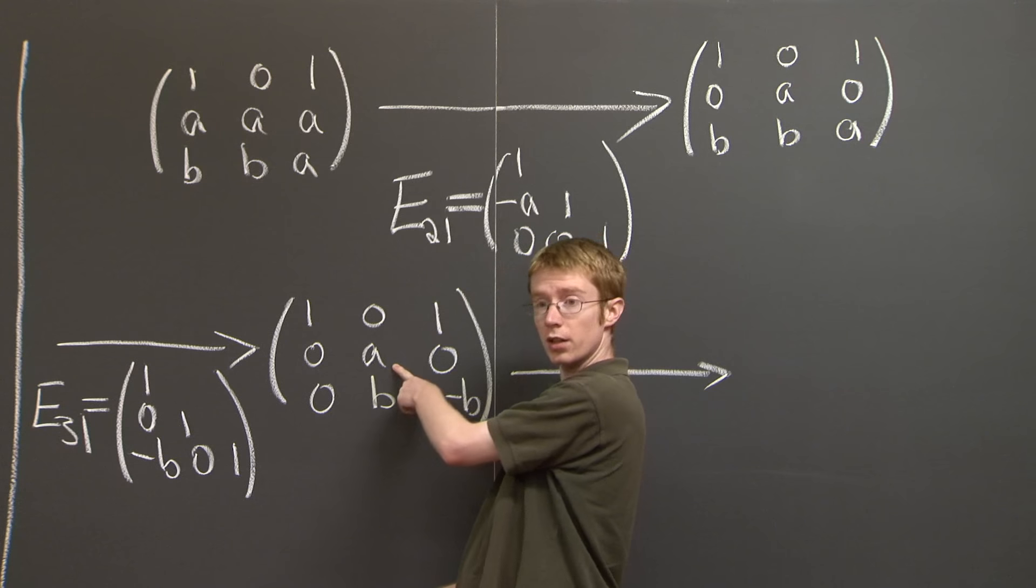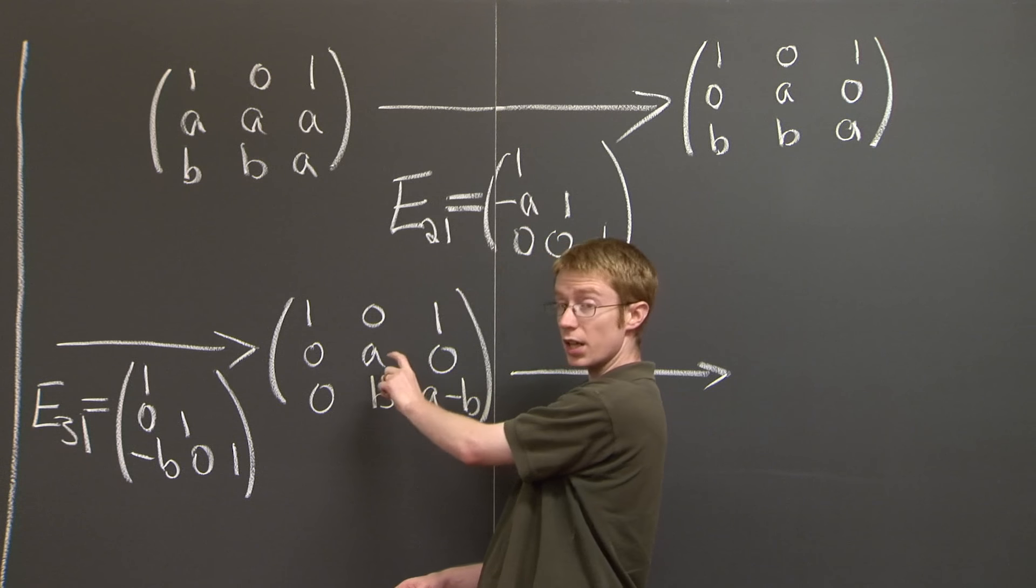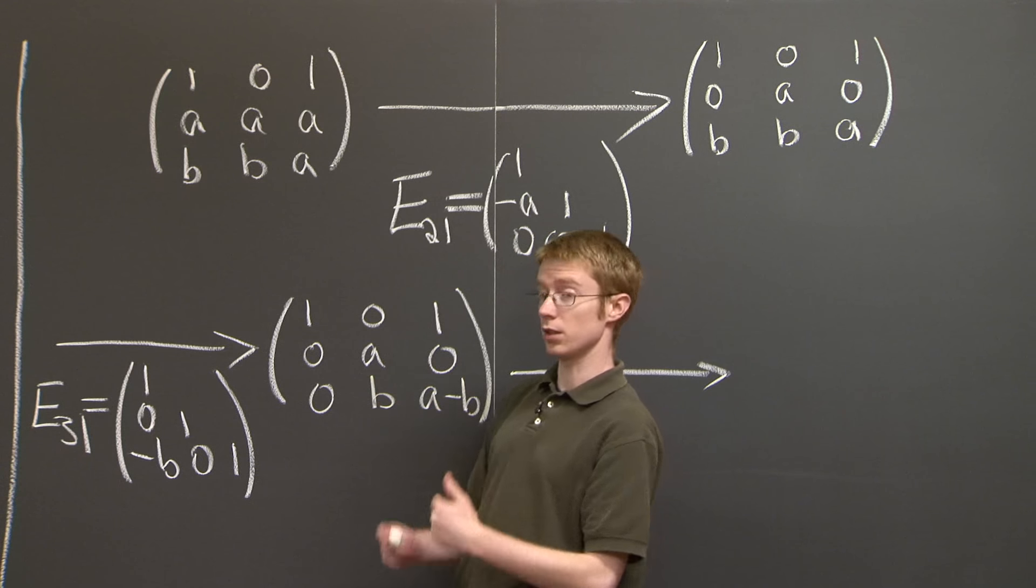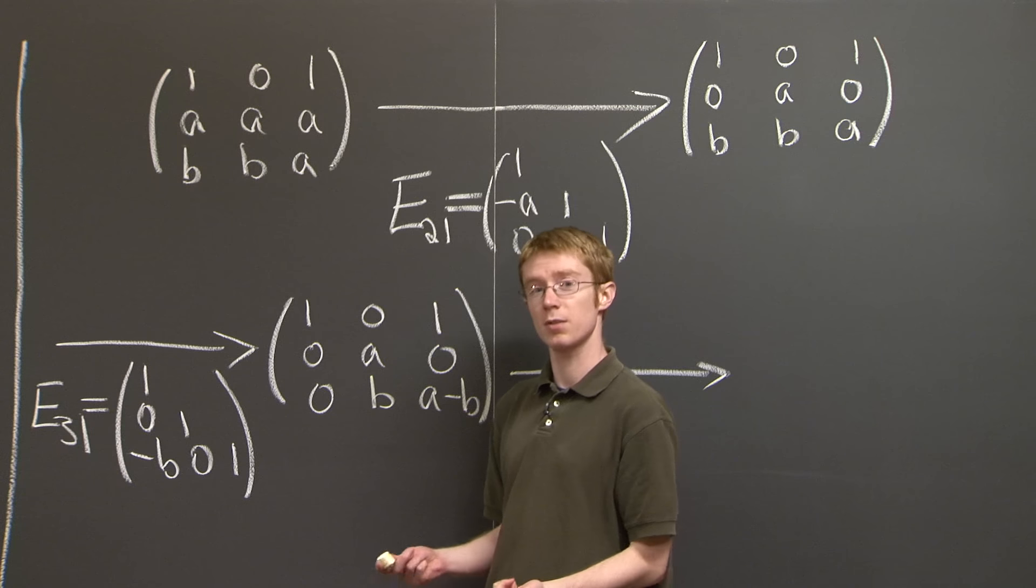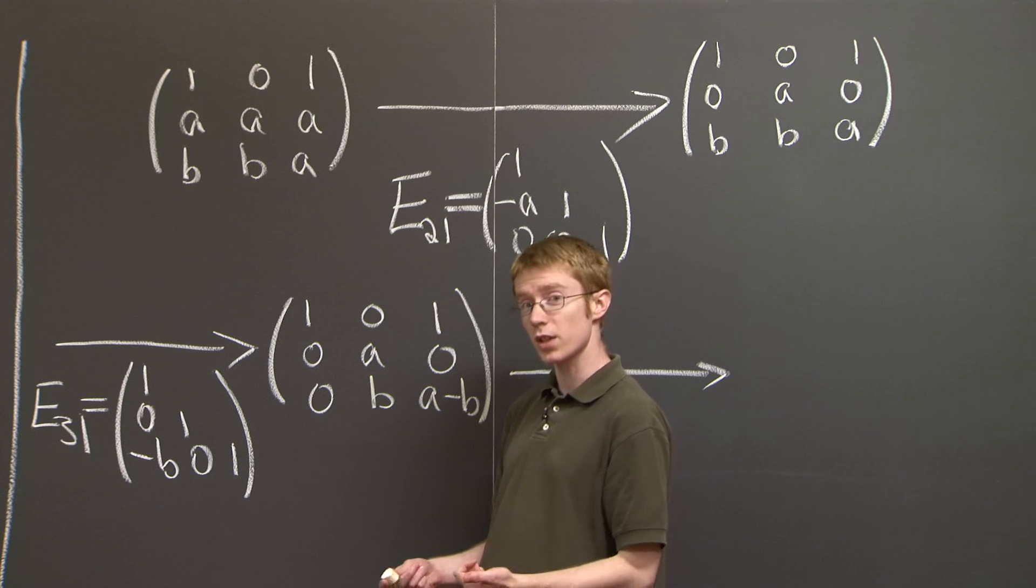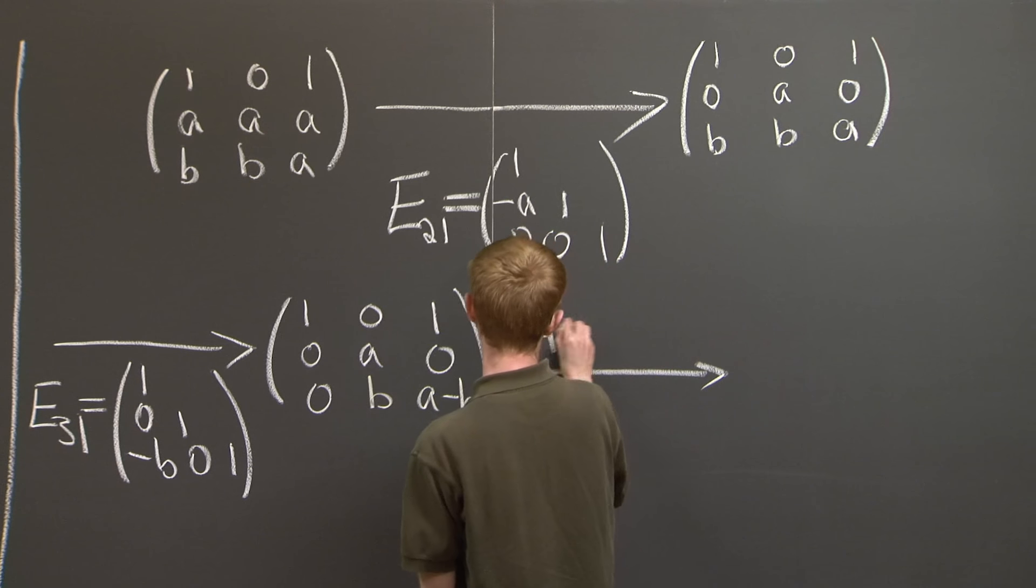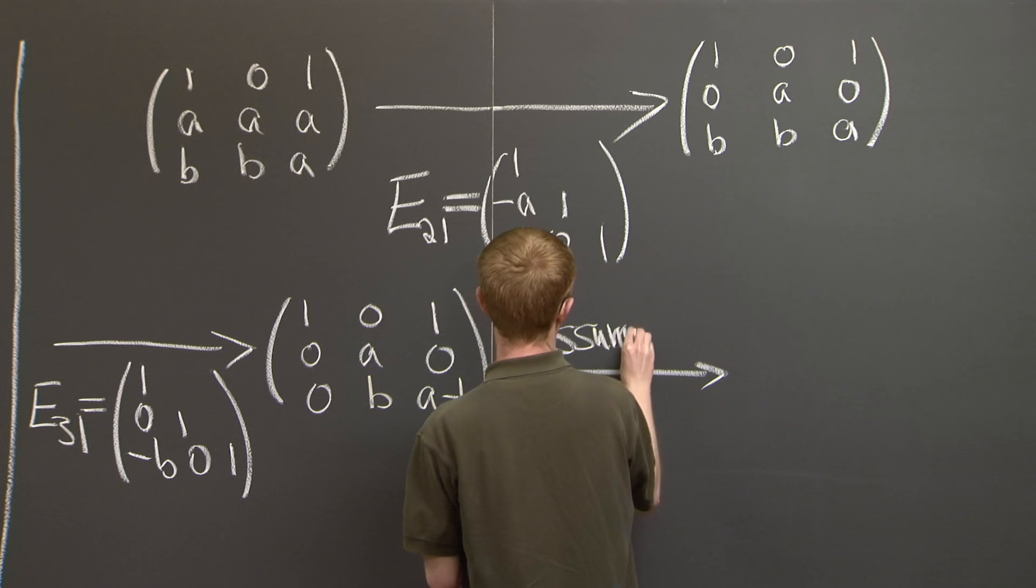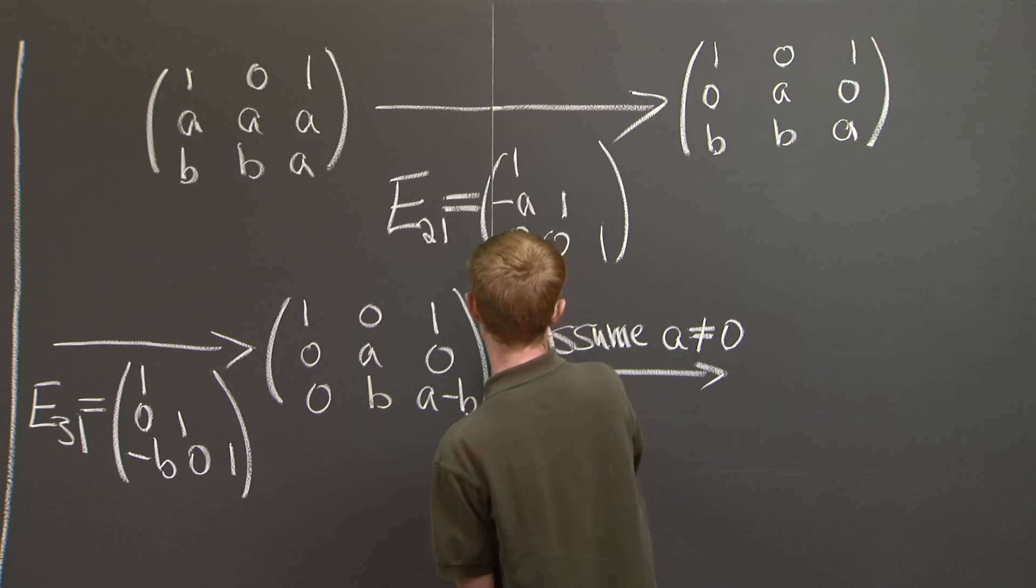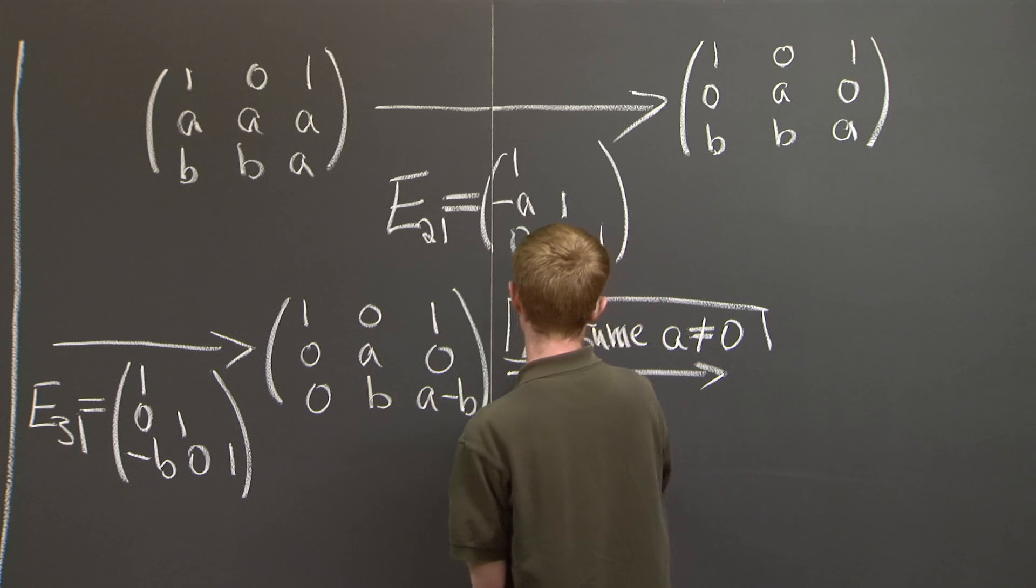If a were 0 here, then we would have to do a row exchange. And that's no good. You can't find an LU decomposition if you have to do a row exchange in elimination. So we need to